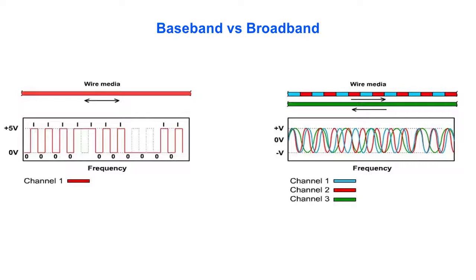In broadband systems, the signal travels in only one direction per channel. A separate channel must be used to receive data.